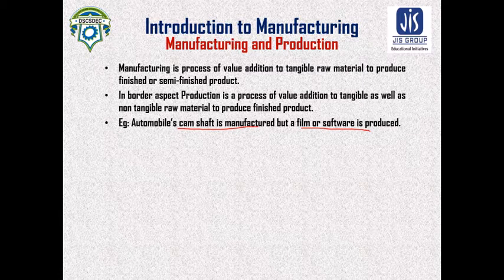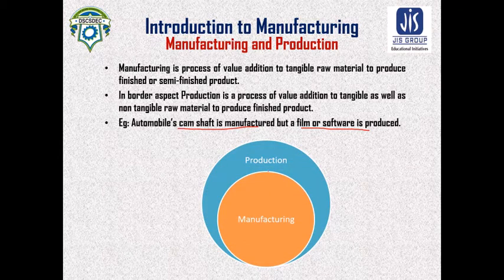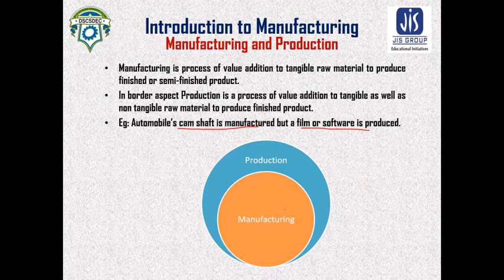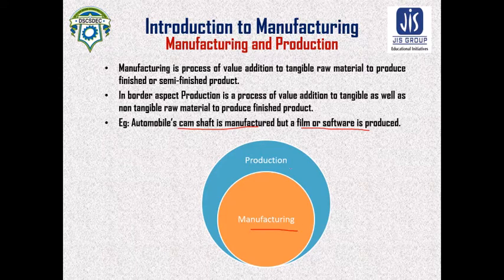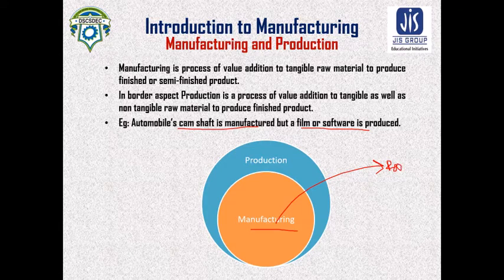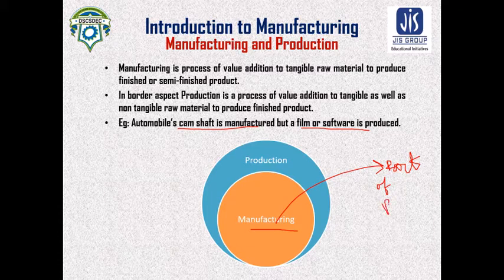As a summary, we can say that production has a broader aspect, and within it there is one particular case — tangible raw material to tangible finished product — which is known as manufacturing. So manufacturing is a part of production.